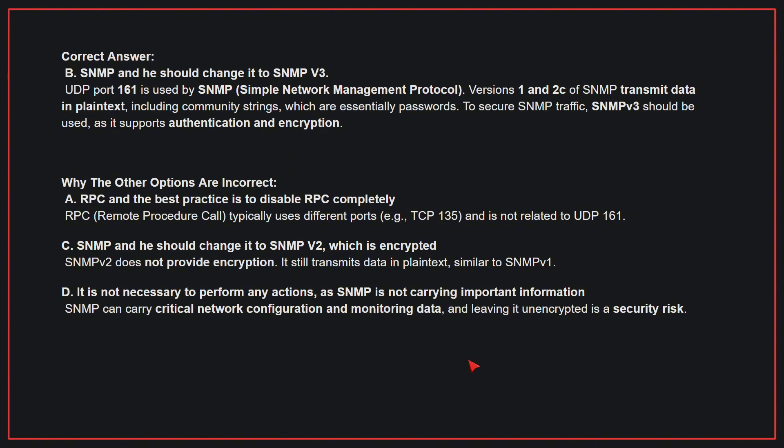Why the other options are incorrect: A — RPC, and the best practice is to disable RPC completely. RPC typically uses different ports and is not related to UDP 161. C — SNMP and he should change it to SNMPv2, which is encrypted. SNMPv2 does not provide encryption; it still transmits data in plain text, similar to SNMPv1. D — It is not necessary to perform any actions, as SNMP is not carrying important information. In fact, SNMP can carry critical network configuration and monitoring data, and leaving it unencrypted is a security risk. Therefore, the correct answer is B.